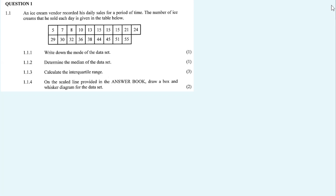What is the mode? It's the number that appears most frequently. The number 15 appears — 1, 2, 3 times — so the mode of the data set is 15.